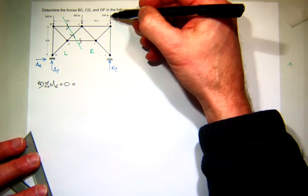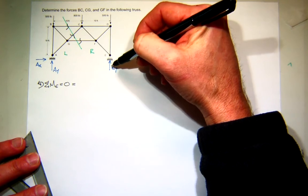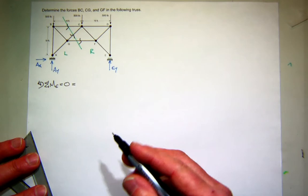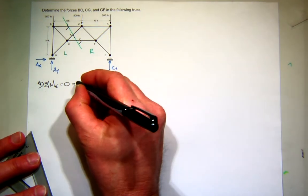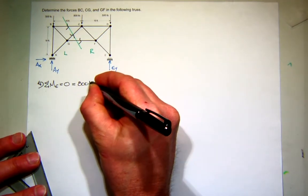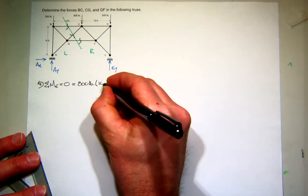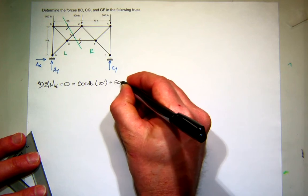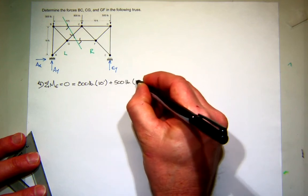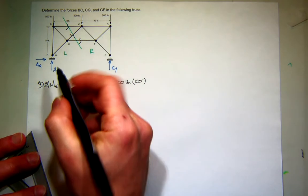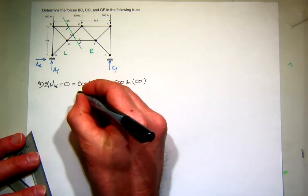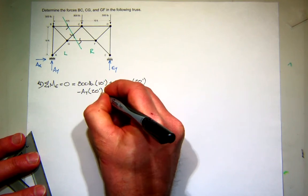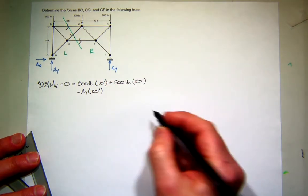Okay, looking at my three forces, this 500-pound force passes through E, so it creates no moment. But the 800 and the 500 create what? Positive or negative moment? Positive. I'll start with the 800-pound first. So I'll have 800 pounds and its moment arm is 10. And then I'll have 500 pounds and its moment arm is 20. And then I'll have my reaction at AY, which creates negative moment, and it has a moment arm of 20.